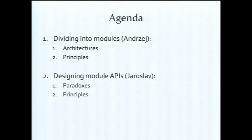The talk is basically divided into two parts. First, I will talk about how you split up your legacy or monolithic application into modules — how you design the boundaries. I will discuss how to split up different architectures and what principles you can use to guide this process. Then Jaroslav will talk about how to design the interconnections between the modules — the APIs of the modules — and he will use some paradoxes and principles to illustrate this.